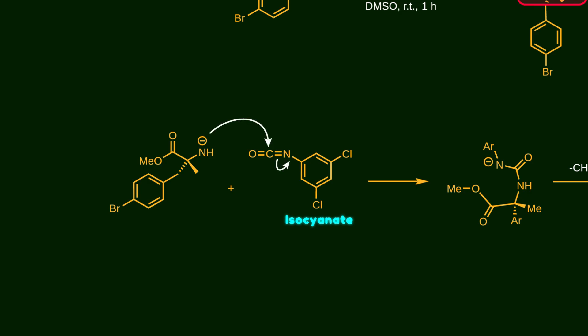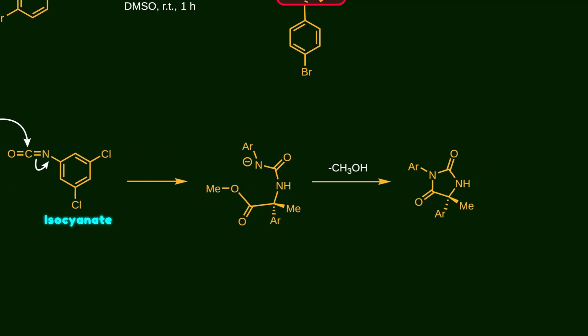First, the free amine attacks the carbon atom of the isocyanide, pushing electrons up into the nitrogen. Now, the stage is set for an intramolecular attack. The negatively charged nitrogen attacks the ester carbonyl and forms the 5-membered ring through an addition elimination mechanism, where methanol is expelled.